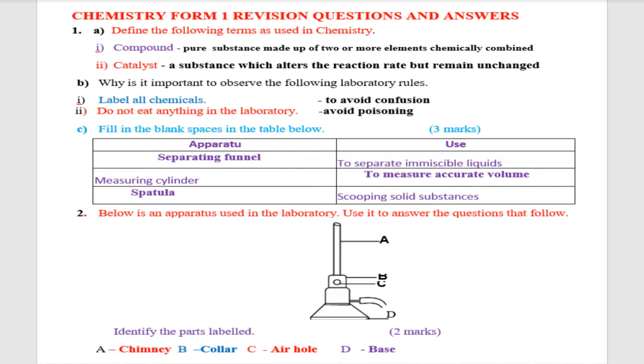And B, why is it important to observe the following laboratory rules? Rule number one: label all chemicals. Why do we label all chemicals? It is to avoid confusion. Two, do not eat anything in laboratory. Why do we say that? That is to avoid poisoning.